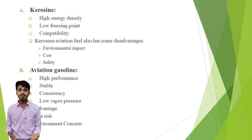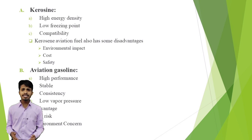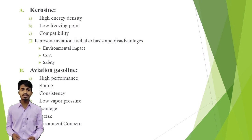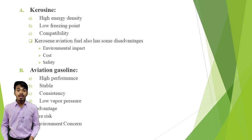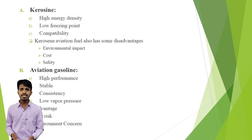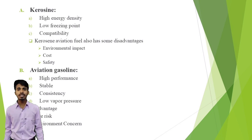Now we discuss about aviation gasoline. Aviation gasoline has high performance — it is formulated to provide high power output and performance for piston engine aircraft. Aviation gasoline is stable because it has a long shelf life and remains stable for long periods even in storage. The formulation of aviation gasoline is strictly controlled to ensure consistency, which helps pilots predict performance and fuel consumption accurately. It also has low vapour pressure, which reduces the risk of vapour loss and other issues related to fuel delivery.